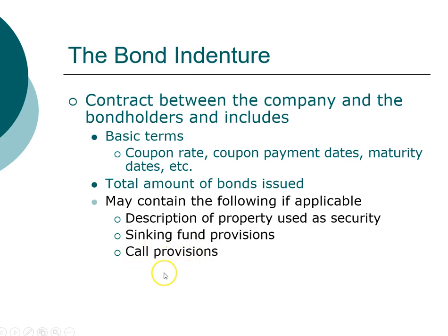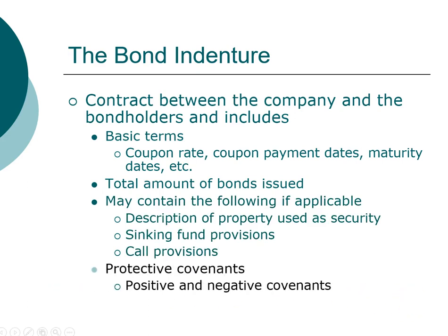The call provision is different — it allows the company the option to pay off the bonds early. This is a prepayment option, and since it is an option and not an obligation, the company will only choose to call the bond if it is to their advantage. Therefore, a bond that has a call provision will typically carry a higher coupon rate.